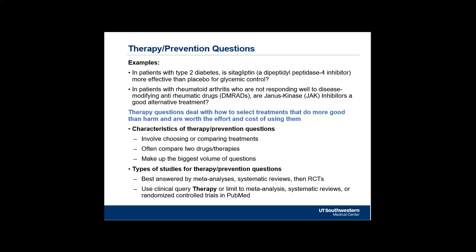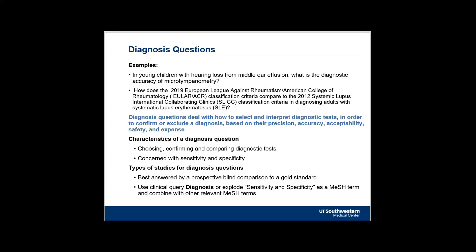With diagnosis questions, you're comparing two different diagnostic tests in order to confirm or exclude a diagnosis. You're looking at precision, accuracy, acceptability, safety, and expense. Expense might be something you take into account with patient values — there might be an alternate to a $2,000 diagnostic test that works just as well for $500 or $200. But you need to investigate whether the more affordable test will give you as clear a diagnosis as the more expensive one. You are looking for a specific kind of clinical trial: a prospective blind comparison to a gold standard.